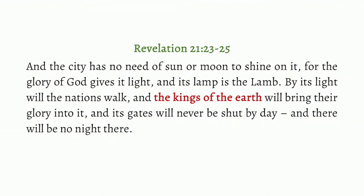Then we come to Revelation 21, verses 23 to 25: 'The city has no need of sun or moon to shine on it, for the glory of God gives it light, and its lamp is the Lamb. By its light will the nations walk, and the kings of the earth will bring their glory into it, and its gates will never be shut by day, and there will be no night there.' Who are these kings of the earth? They're not part of the New Jerusalem — the New Jerusalem has descended. Yet the kings of the earth bring their glory to the city. Did God destroy them? Yeah, so to speak. But how? This is how.